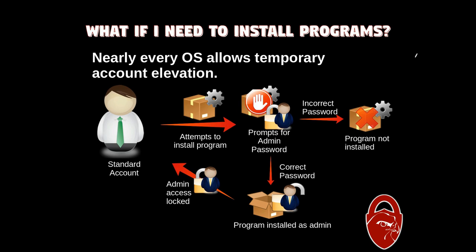So what if you need to install a program? Nearly every operating system supports something called account elevation. You can think of account elevation as the worker asking the boss to do something. For example, say the worker needs something purchased. Since the worker can't purchase anything for the office, he'll have to ask the boss to purchase something on his behalf. There's probably an approval process, and once that's done, the worker gets whatever he wanted the boss to order.